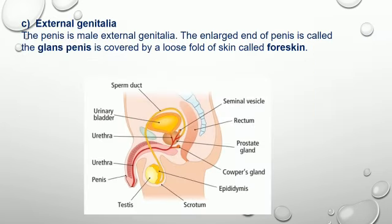The external genitalia: the penis is the male external genitalia. The enlarged end of the penis is called the glans penis, and it is covered by a loose fold of skin called the foreskin.